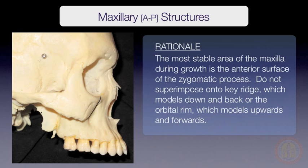Key ridge cannot be relied upon because it models downwards and backwards over time. You also cannot rely on the region just below the orbital rim, where the zygomatic process and orbital floor meet, as the orbital rim and orbital floor model upwards during growth. Thus, it is only the region between the orbital rim and key ridge that should be superimposed upon.